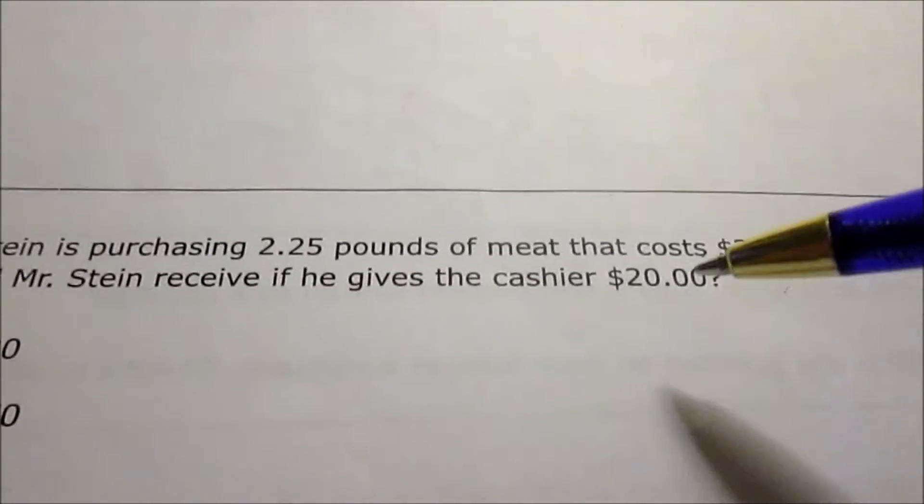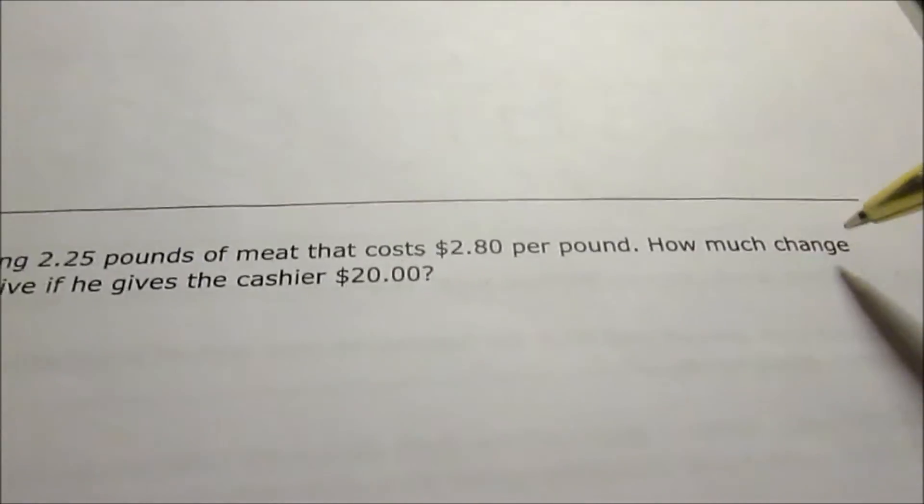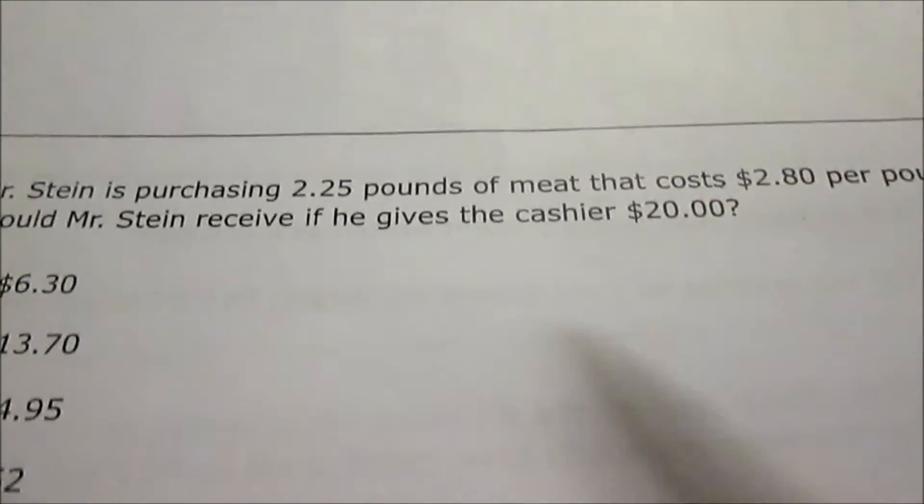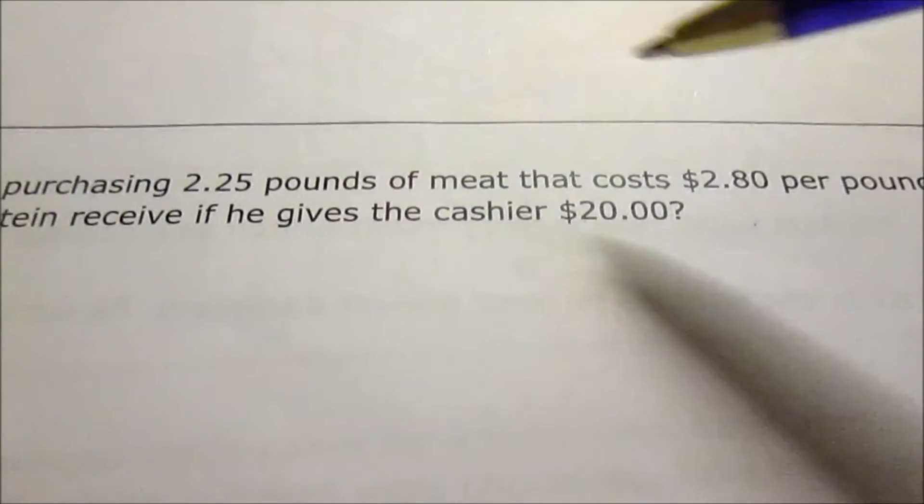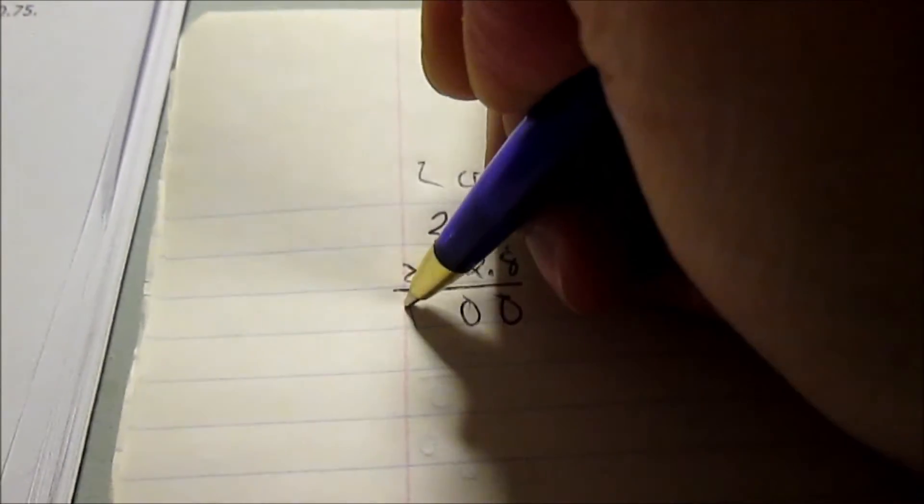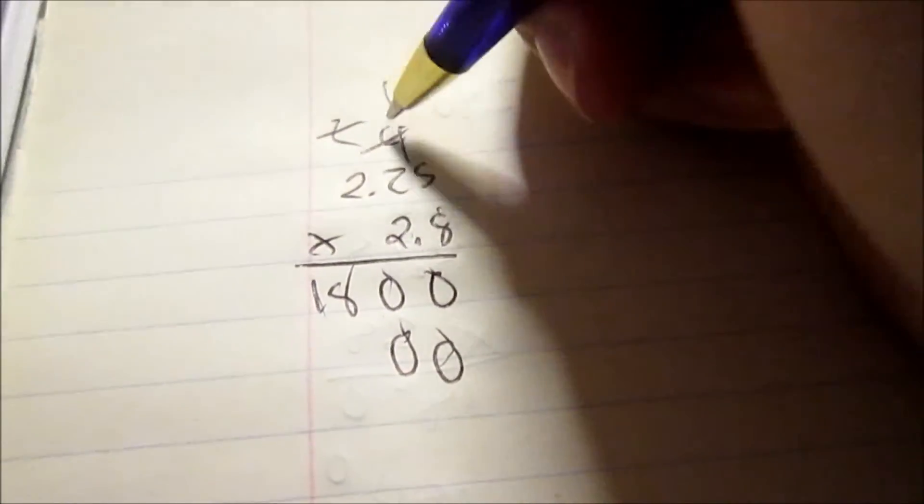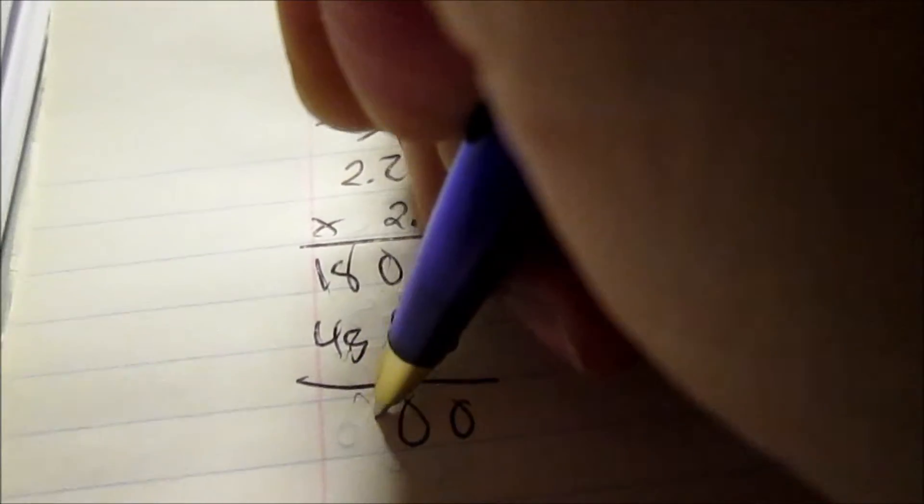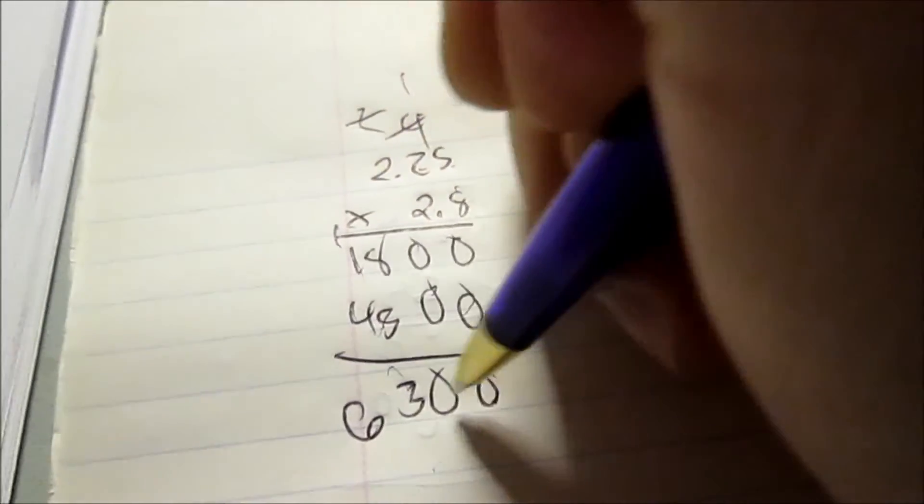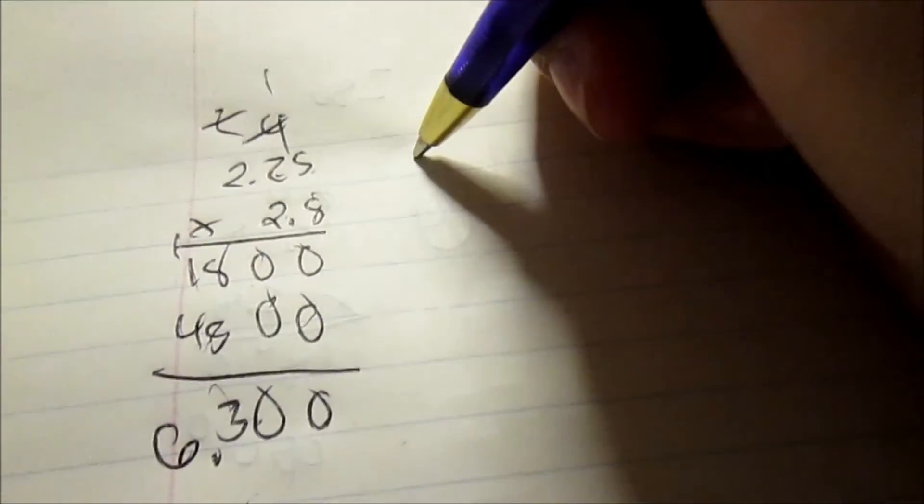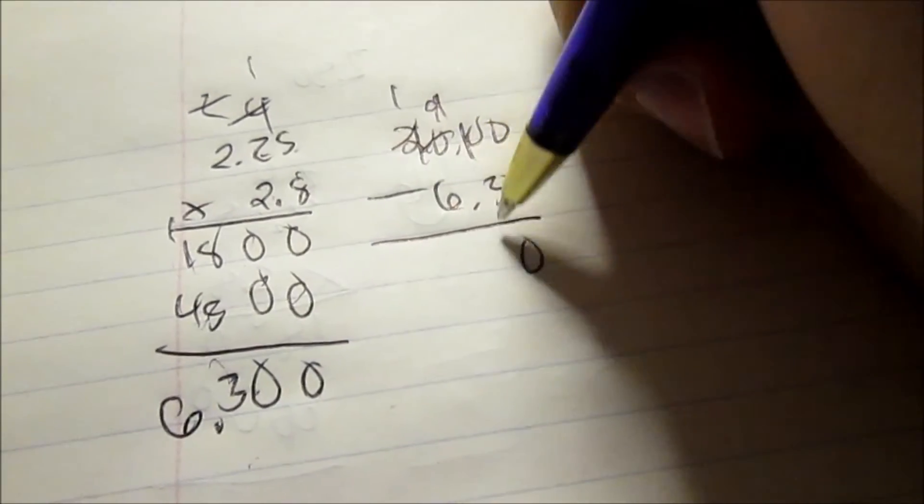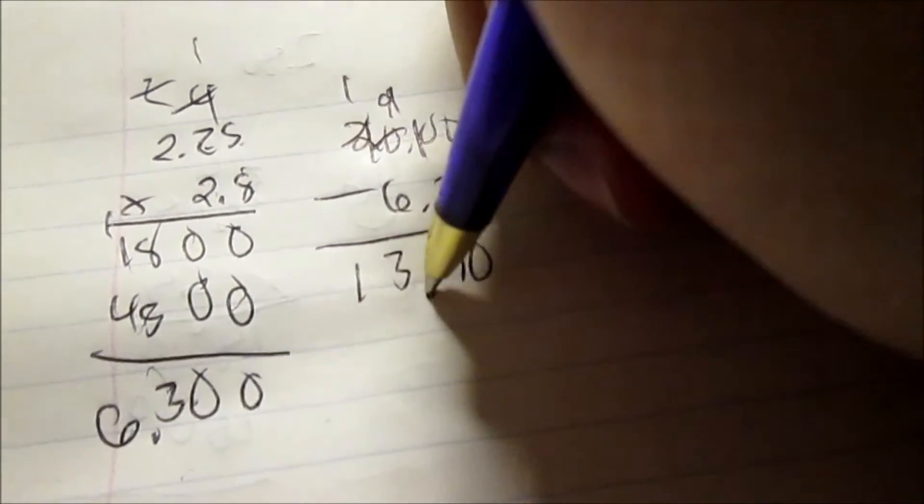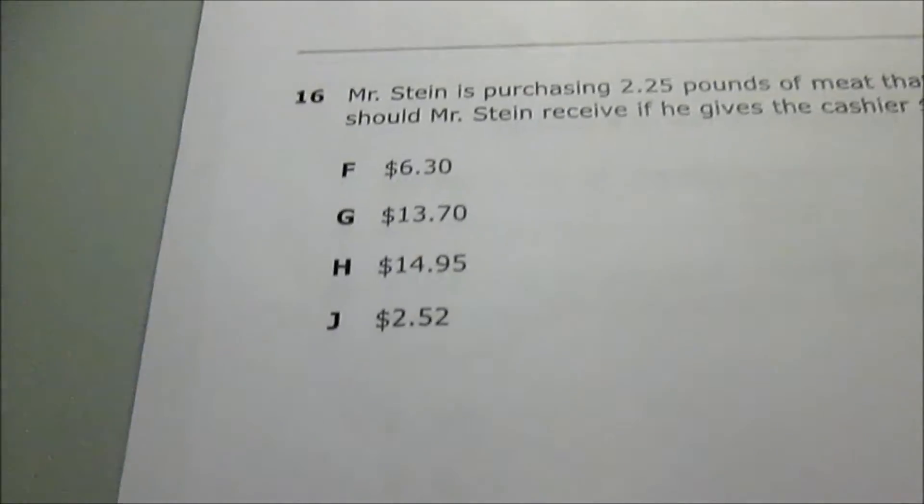Mr. Stein purchased 2.25 pounds of meat that cost $2.80 per pound. How much change should he receive for $20? To find the cost of what he pays for the meat, do the pounds times the cost per pound: 2.25 times 2.8. I'm going to do that over here. And then add. 1, 2, 3. That's $6.30. Next, since he paid with the $20 bill, I subtract $6.30 from $20. $13.70 is what change he got back. That's G.